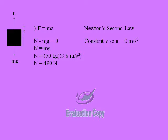Then to solve for the normal force, you can rearrange the equation and plug in your known values. These values include the given mass, which is 50 kilograms, and the acceleration due to gravity, which is 9.8 meters per second squared. It should work out so that the normal force is equal to 490 newtons.